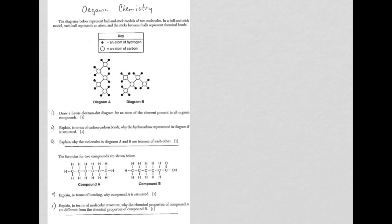Alright, so question one here is asking you to draw what's called the Lewis-Dot Diagram for an atom of the element present in all organic compounds. Well, if you studied organic chemistry, you know you have to have carbon atoms in order to have an organic compound.